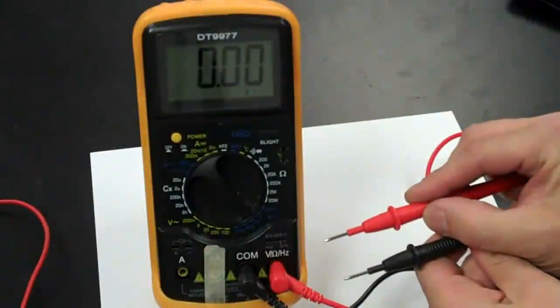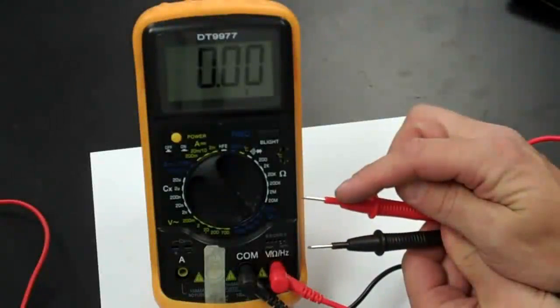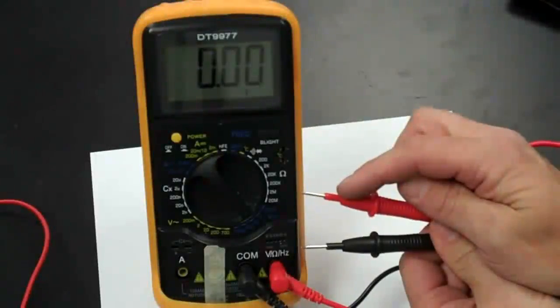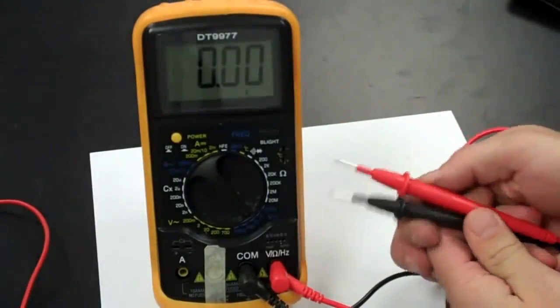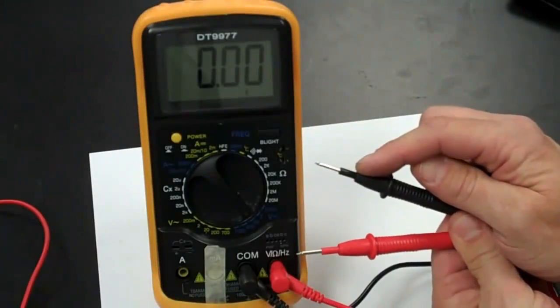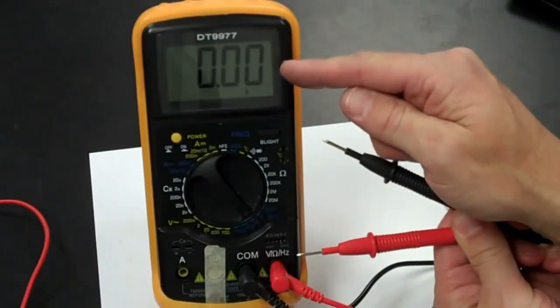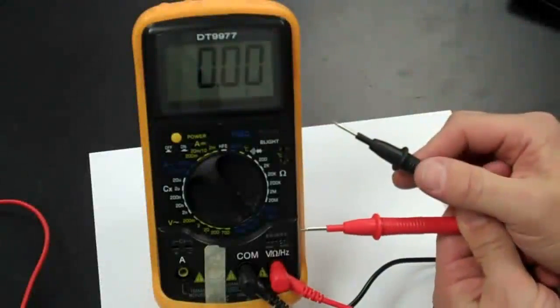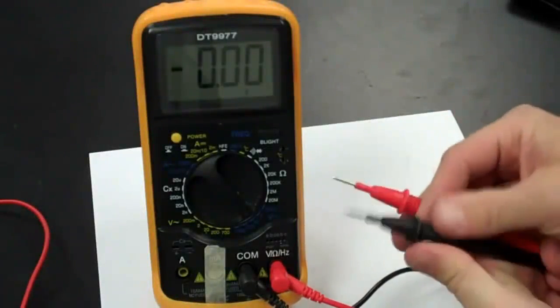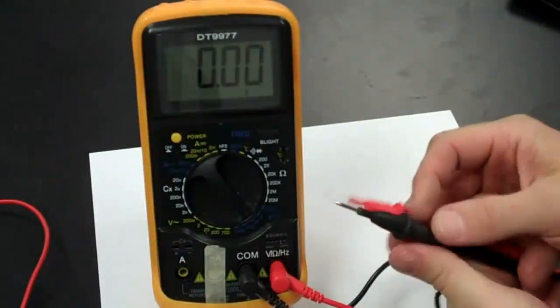When you place the probes across the resistor, if you make sure the red probe is on the same side of the resistor as the positive power supply terminal, then you'll get a positive reading. If the probes are switched and the black probe is on the side of the resistor that is connected to the positive terminal of the power supply, you'll see the same number of volts appear in the display but with a negative sign. The negative sign just indicates that the polarity of your probes is switched. For the most part, all we care about is the magnitude of the voltage, not the sign.